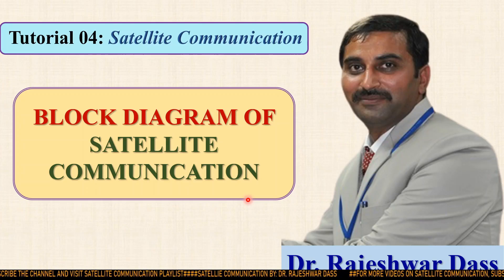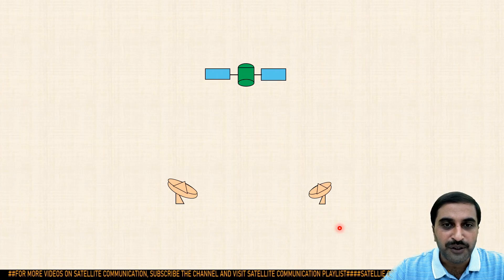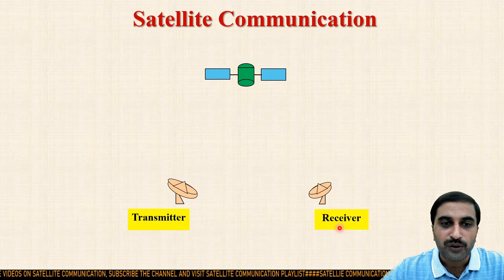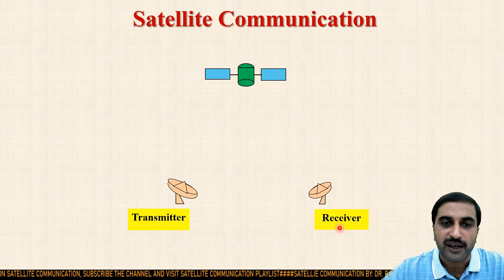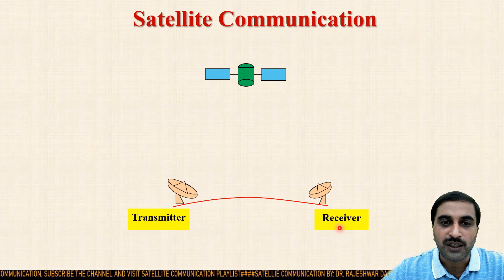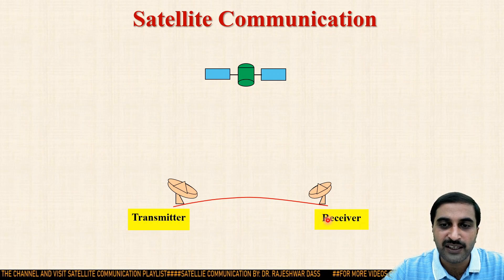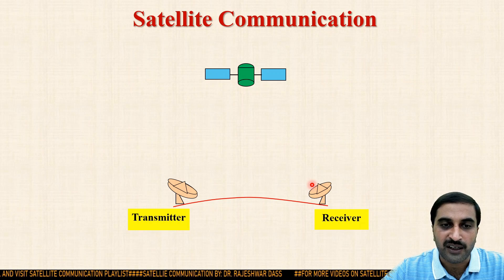In this video I will discuss about the basic block diagram of satellite communication. In the previous class we have seen how satellite communication takes place. On the ground we have the transmitter and the receiver, and communication between them takes place through the satellite. The transmitting earth station has an antenna known as the transmitting earth station antenna, and the receiving earth station has an antenna known as the receiving earth station antenna.